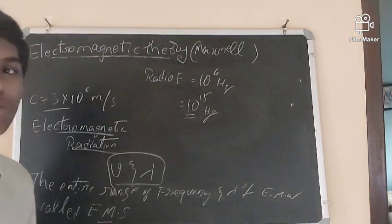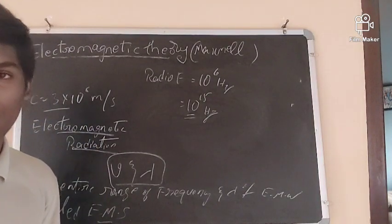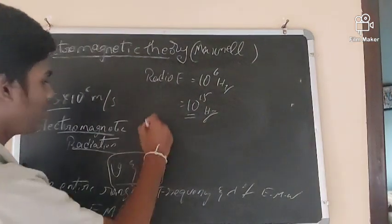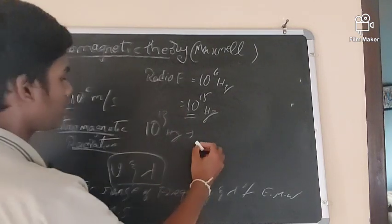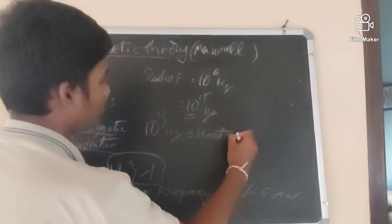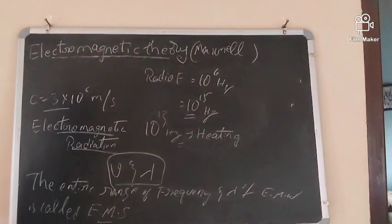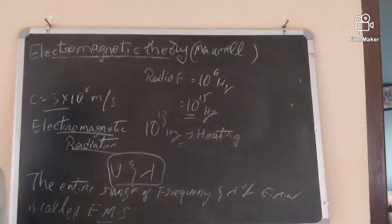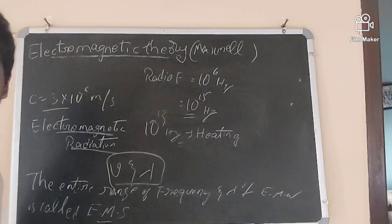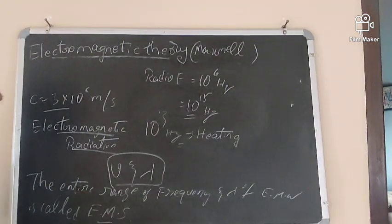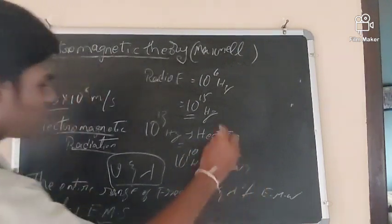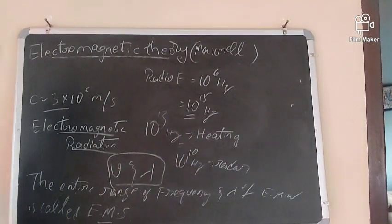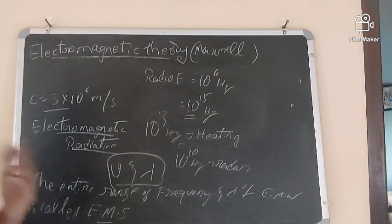We can see light in the frequency range around 10¹⁵ Hz. Waves at a frequency of 10¹⁰ Hz are used in different radars. These are detected or calculated by using different electronic devices.